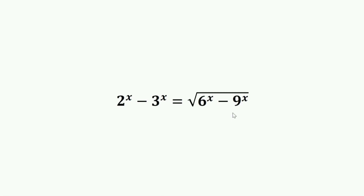Hello everyone. Solve the equation: 2 raised to x minus 3 raised to x equals square root of 6 raised to x minus 9 raised to x. To solve this problem,